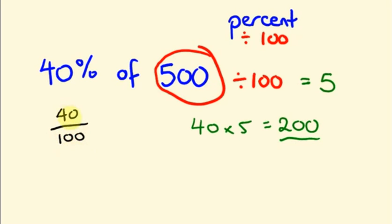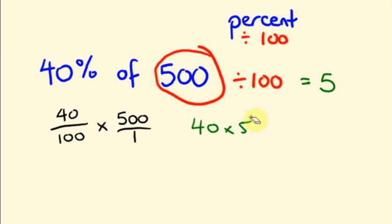The usual method we will be doing is: forty divided by hundred into five hundred divided by one. Two zeros get cancelled with the hundred, and forty into five gives the answer as two hundred. Instead of that, we can directly divide the five hundred by hundred and multiply with the percentage value.